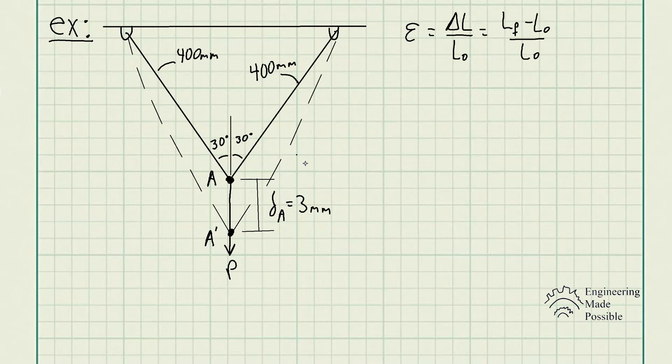This problem is only going to be involving trigonometry. We have the original length of 400 millimeters here, and since this is going to be symmetric we could actually solve for this length, which is basically 400 times sine theta, and we know the angle theta is 30 degrees. So we have this length, the original length, and now let's go ahead and calculate this.